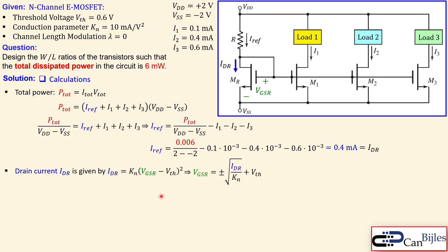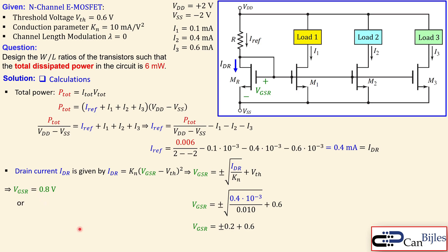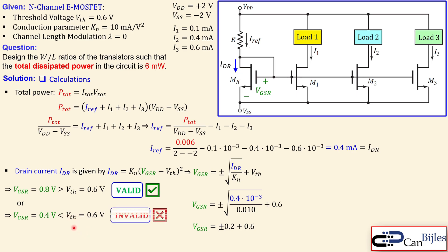This formula gives us the value of V_GS for MR, which is also the same for M1, M2, and M3 since they share the same gate. Solving the quadratic gives two solutions: 0.2 + 0.6 = 0.8 V and −0.2 + 0.6 = 0.4 V. The valid solution must be larger than the threshold voltage of 0.6 V. So 0.8 V is valid and 0.4 V is invalid. Therefore V_GS_R = 0.8 V.